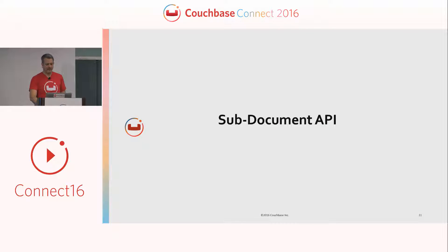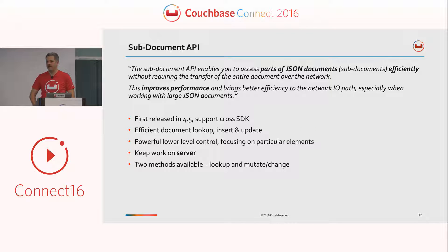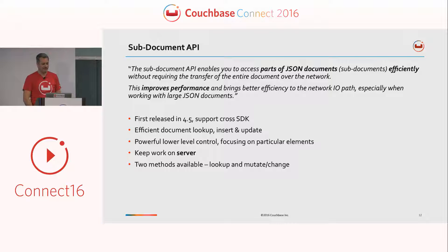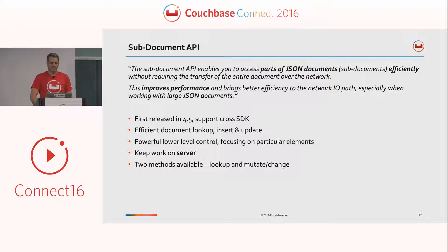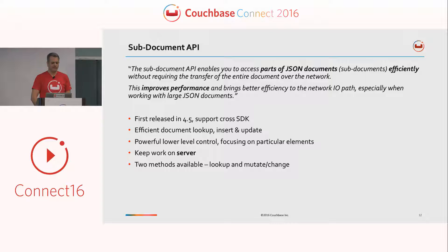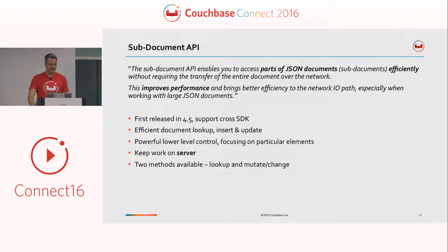I want to talk a minute about our sub-document API. It allows you to access parts of the JSON document efficiently without requiring the transfer of the entire document over the network. So it improves performance and brings better efficiency to the network I/O path, especially when working with large JSON documents.